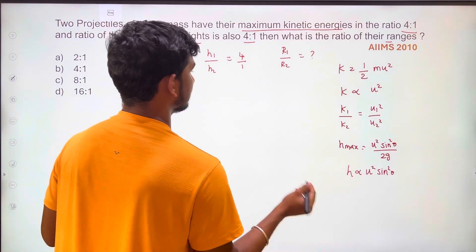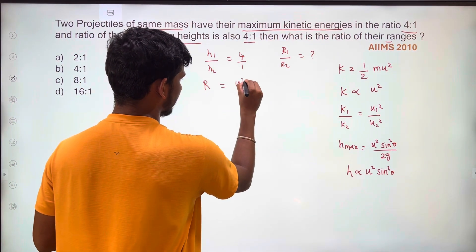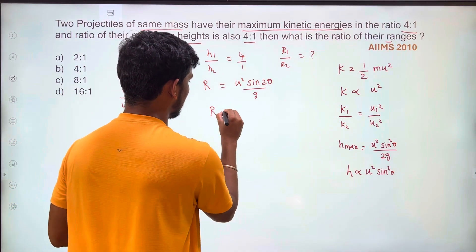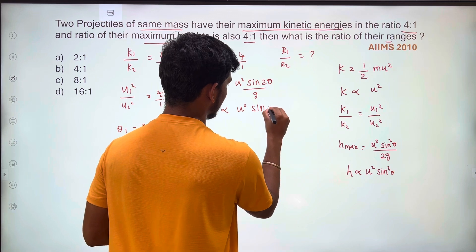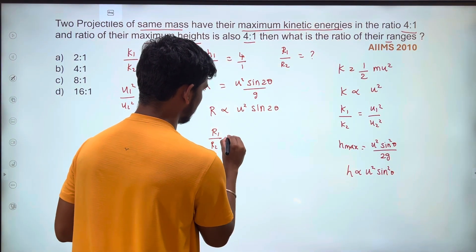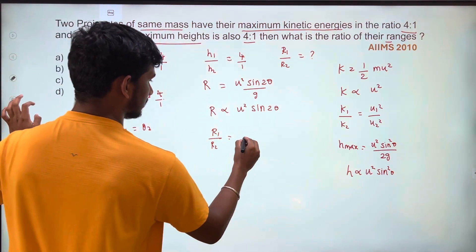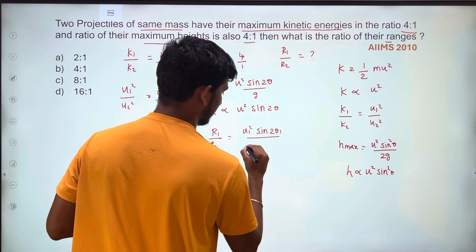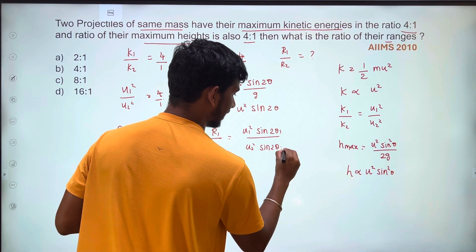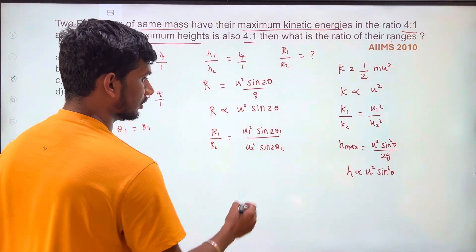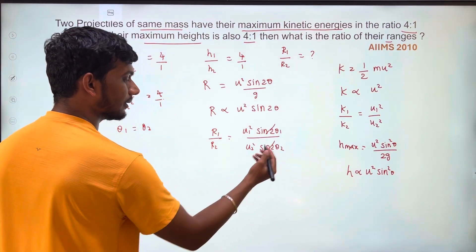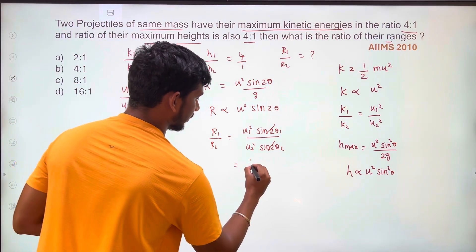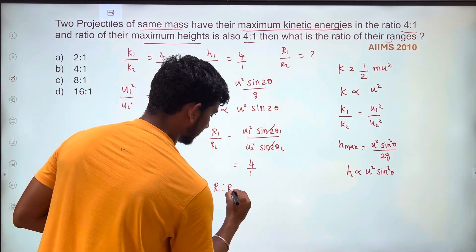Next, the range formula is R = u squared sin 2theta divided by g. Since acceleration due to gravity is constant, R is proportional to u squared sin 2theta. So R1 by R2 equals u1 squared sin 2theta1 by u2 squared sin 2theta2. Since theta1 equals theta2, the sine terms cancel, and R1 by R2 equals u1 squared by u2 squared, which is 4 is to 1.